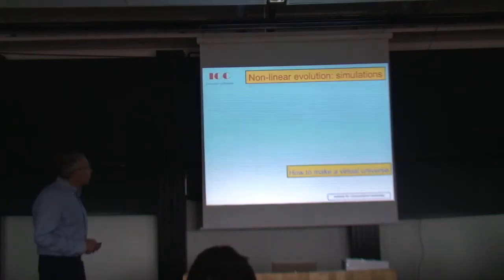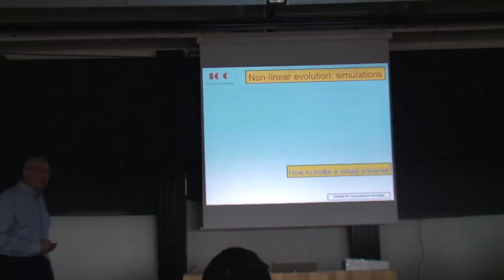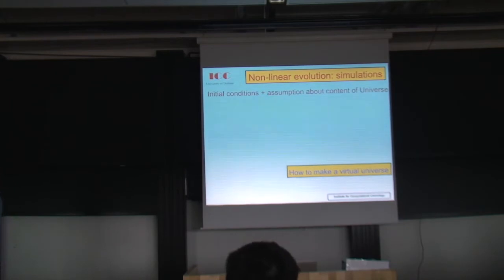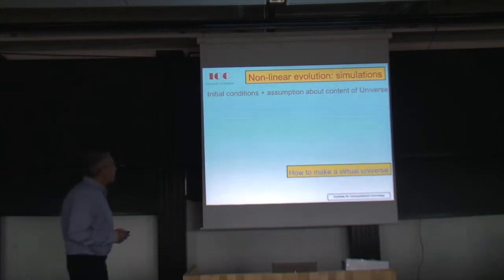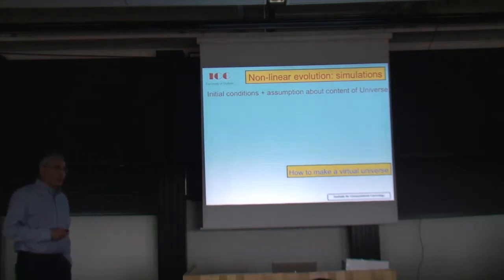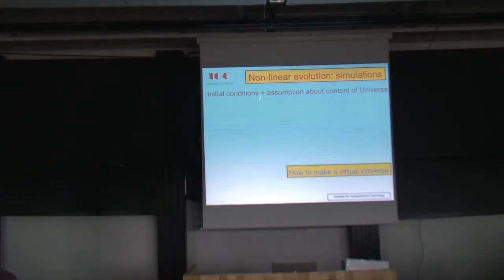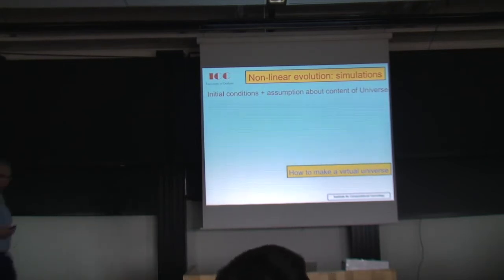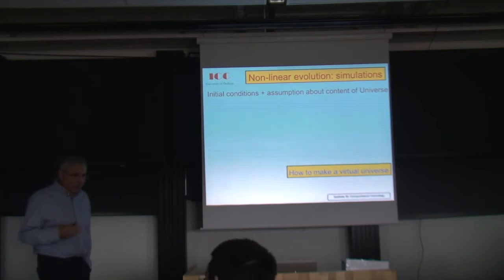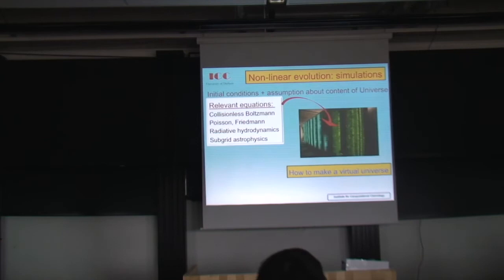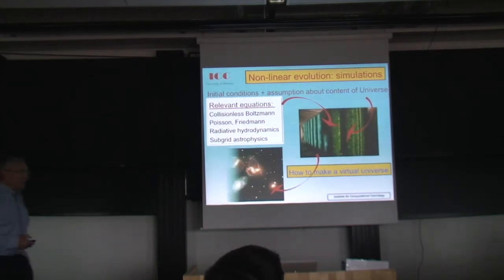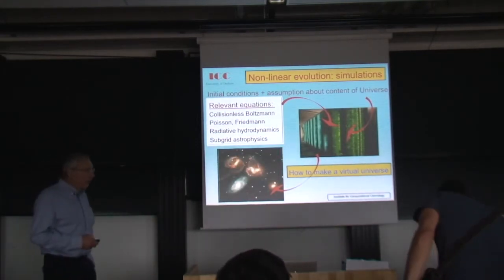For those of you who don't follow computer simulations, they're quite simple things. We start with initial conditions — which we didn't know in the 80s, but now we know because we see them in the temperature anisotropies of the microwave background — and then assume some initial conditions, make an assumption about the content of the universe. The key one is the nature of the dark matter, and then you program the key equations in the computer, which you solve, and see what kind of universe you get.